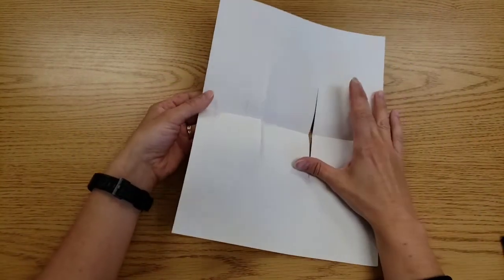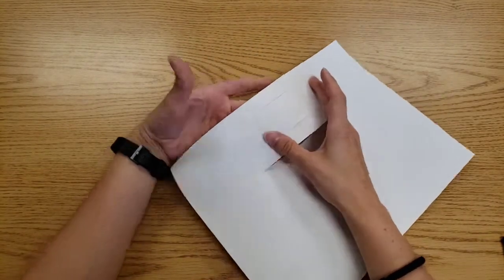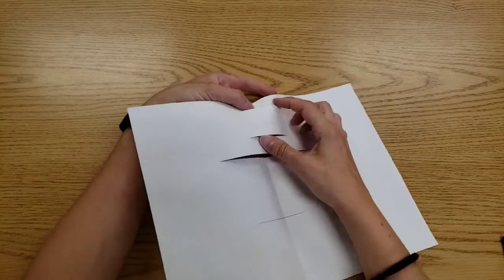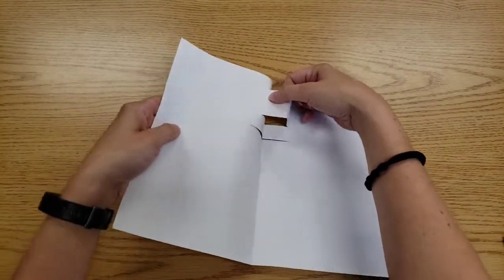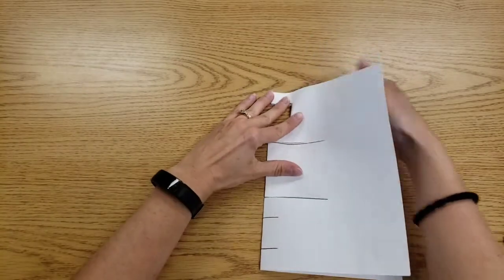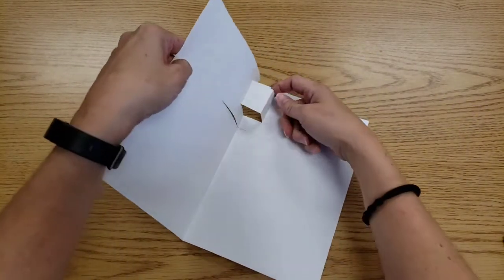So I'm going to take this section that I drew first. My hand's behind it. Popping it up. So it goes the other direction. If you fold the paper, you can carefully crease it. So now it sticks out.